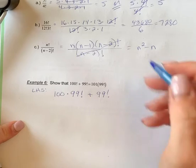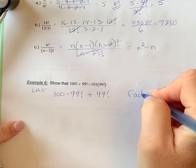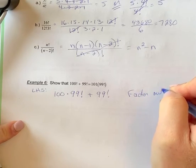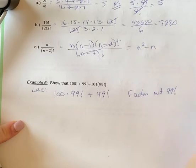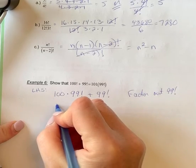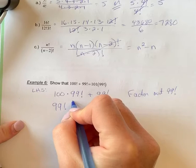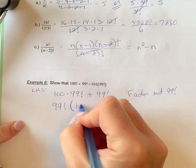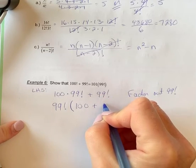I want these two numbers to be the same because now I'm going to factor out 99 factorial. So it's going to look like this: 99 factorial, and I factored out and I'm left with 100 plus 1.